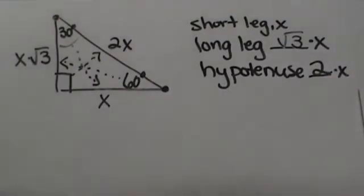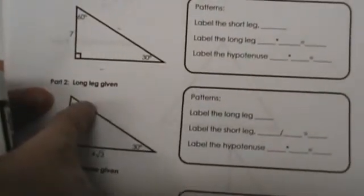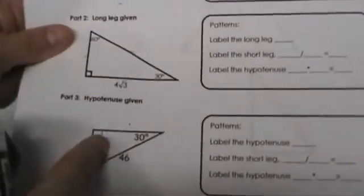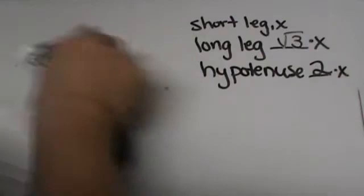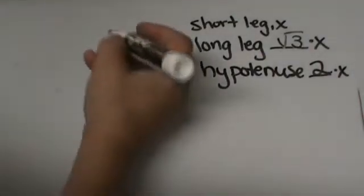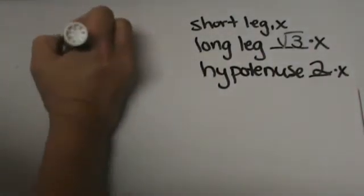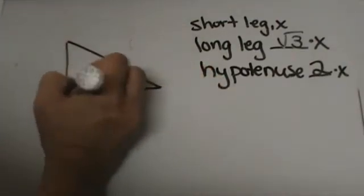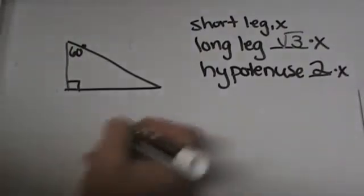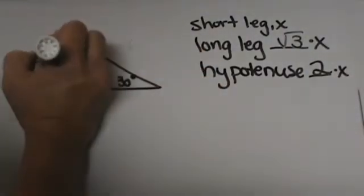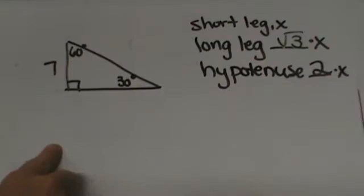Now I am going to show you how to use those rules given each one of the scenarios: if you are given a short leg, if you are given a long leg, or if you are given the hypotenuse. So let's start with this first one. I am going to draw this triangle. Notice we have turned the triangle so you have to be careful. This one we are given the short leg.